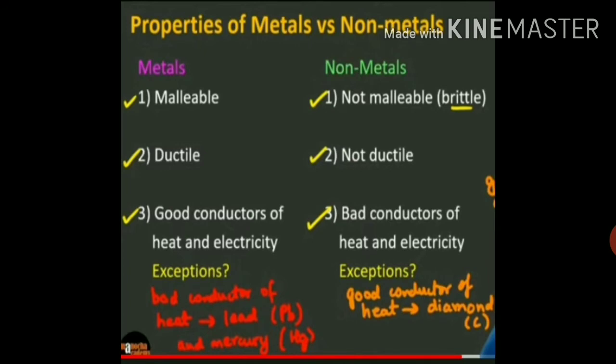Though all metals are good conductors of electricity, we have exceptions. Metals like lead and mercury are bad conductors of heat. Now, non-metals are poor conductors of heat and electricity — this means that non-metals do not allow heat and electricity to pass through them.